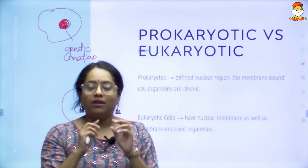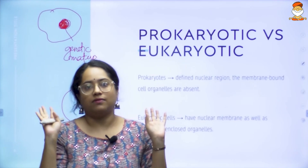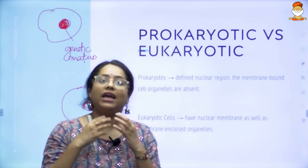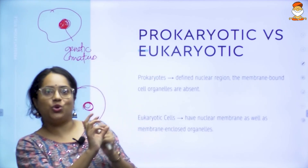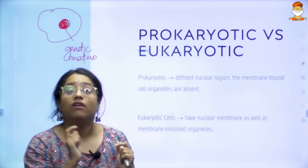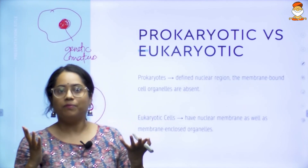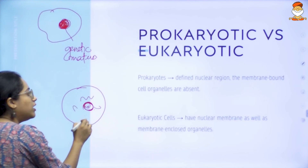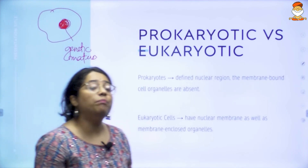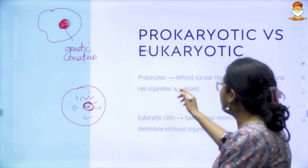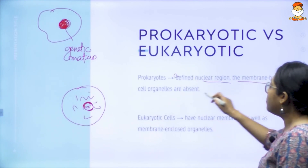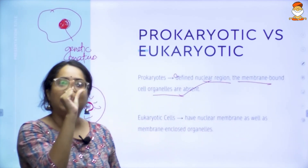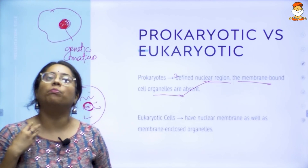In a prokaryotic cell, that nuclear membrane is not there. If the nuclear membrane is absent, there is no specific area you can clearly define and say 'that is the nucleus.' Whatever is present in the nucleus — the genetic material — will be floating in the cell. So in a prokaryote, a defined nuclear region and membrane-bound cell organelles are absent. There is no defined area called the nucleus in prokaryotes.